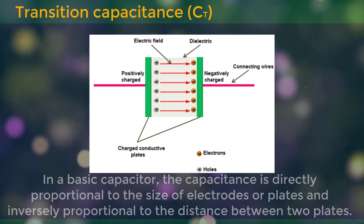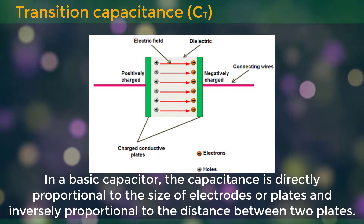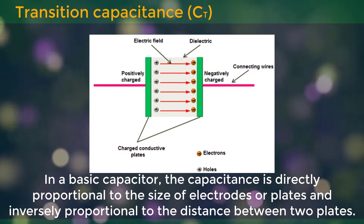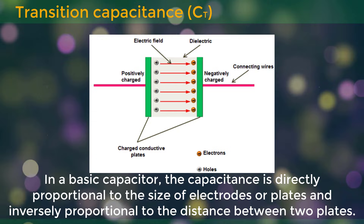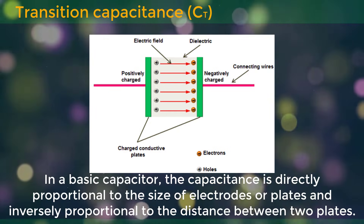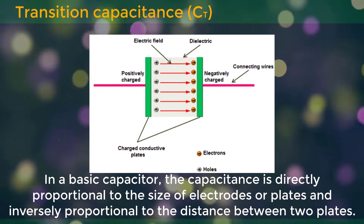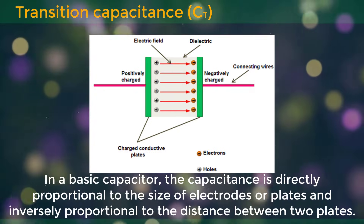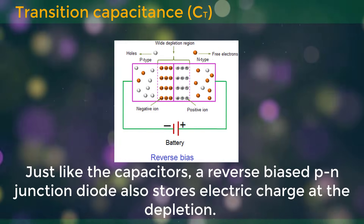The ability of the material to store electric charge is called capacitance. In a basic capacitor, the capacitance is directly proportional to the size of electrodes or plates and inversely proportional to the distance between the two plates.